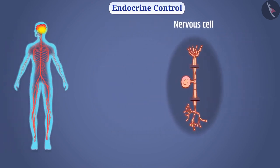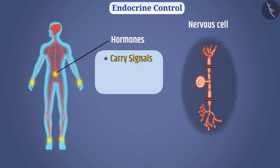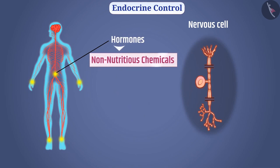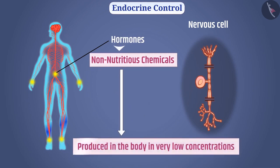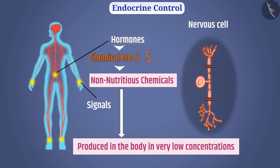In our body, hormones are used to carry signals to all the cells of the body and to maintain coordination for a long time. Hormones are non-nutritious chemicals that are produced in the body in very low concentrations. They are used to carry signals to various cells of the body, and therefore hormones are called chemical messengers.